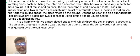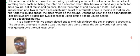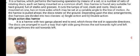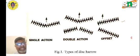The single action disc harrow has two gangs placed end to end which throw the soil in opposite directions. The right-hand gang throws the soil towards the right and the left-hand gang throws the soil towards the left. A gang is a collection of a number of discs. So the right-side gang throws soil to the right and the left-side gang throws soil to the left. Images showing single action, double action, and offset types of disc harrows are presented here.